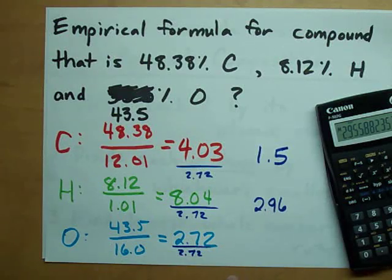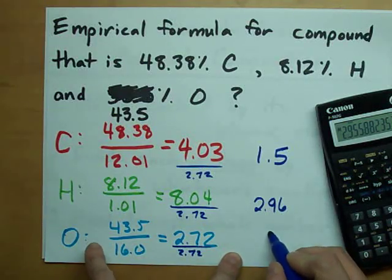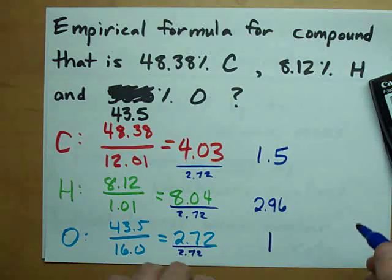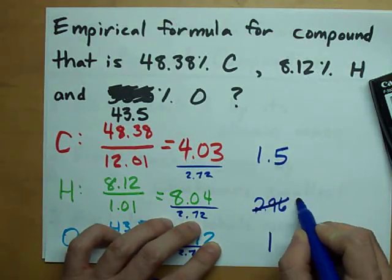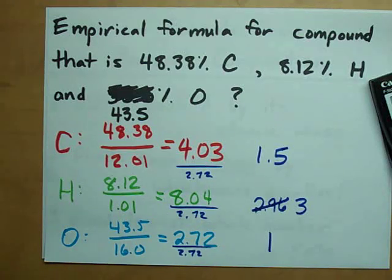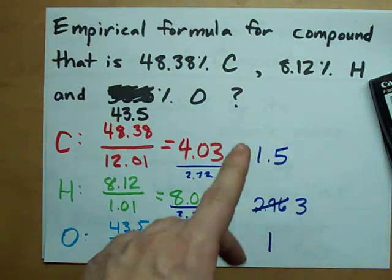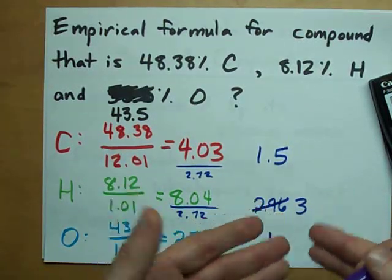Actually, that's pretty close to 3. And 2.72 divided by 2.72 is clearly 1. So my ratio here seems to be 1.5 to 3 to 1. There's always going to be little rounding things that you're going to have to watch out for. Be okay with rounding. Don't round too much. But if it's a 0.9, round it to the nearest whole number.